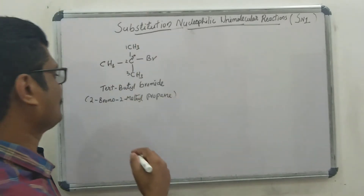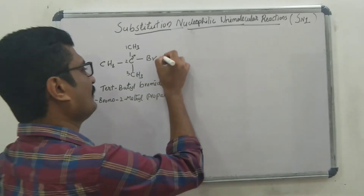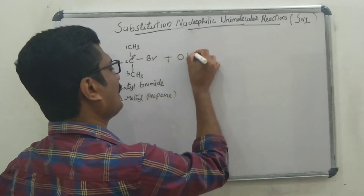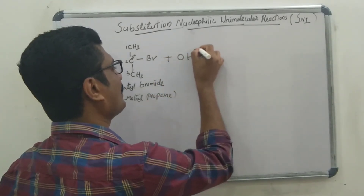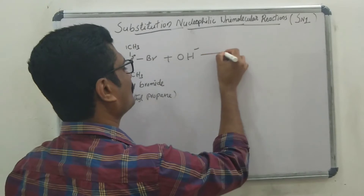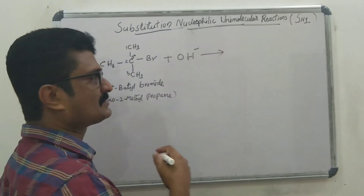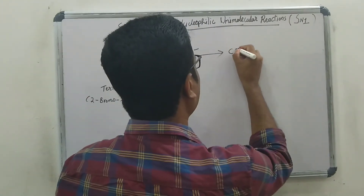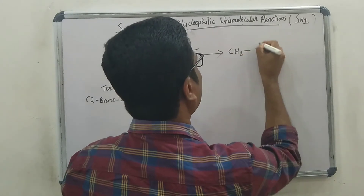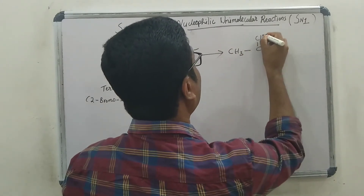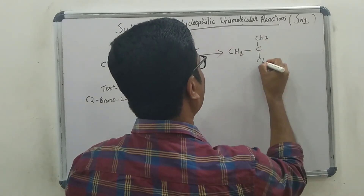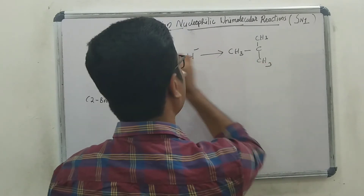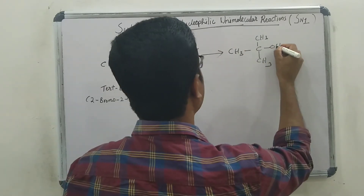Tertiary butyl bromide reacts with hydroxide ion, OH⁻, and here forms the product tertiary butyl alcohol. Here, Br⁻ is replaced by OH.